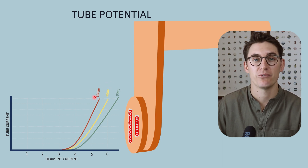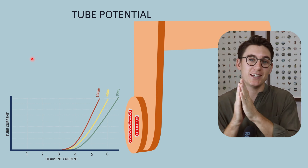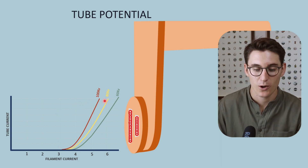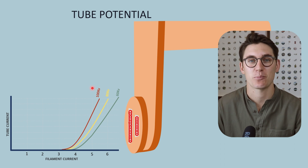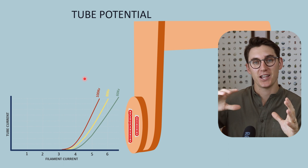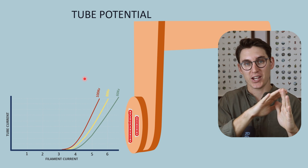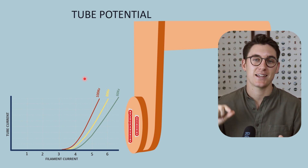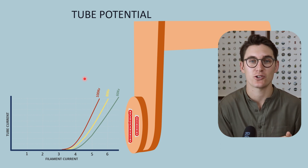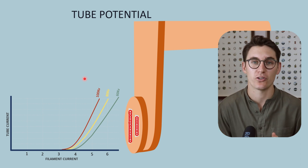There is a concept called the 15% rule: when we increase our kV by 15%, we need to halve our filament current in order to compensate for that increase in tube current. This is a concept that we will look at in a separate talk. Increasing kVp increases our tube current and ultimately increases the number of X-rays produced — this is an incredibly important topic for exams.